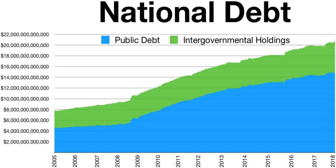Debt held by government accounts represents the cumulative surpluses, including interest earnings, of various government programs that have been invested in treasury securities. In general, government debt increases as a result of government spending and decreases from tax or other receipts, both of which fluctuate during the course of a fiscal year. In practice, treasury securities are not issued or redeemed on a day-by-day basis, and may also be issued or redeemed as part of the federal government's macroeconomic management operations.